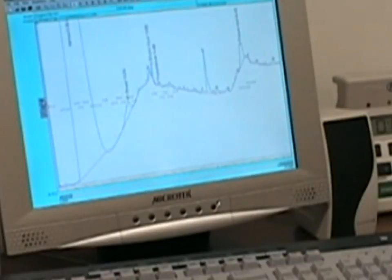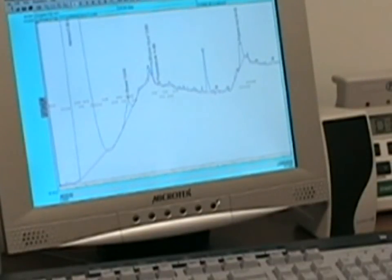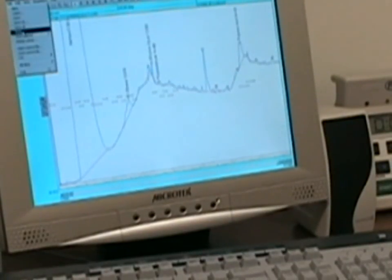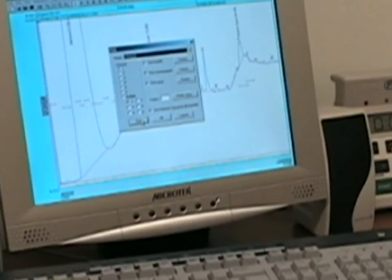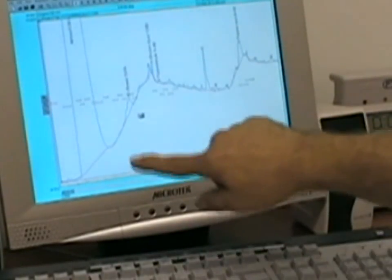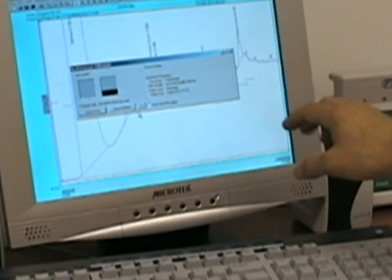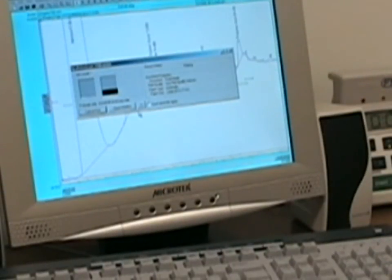Once we have everything displayed, we click on file, print, and print, and the chromatogram picture and the table of data will be sent to the printer.